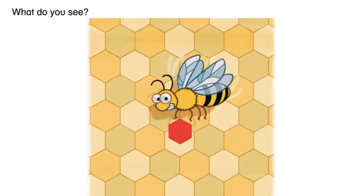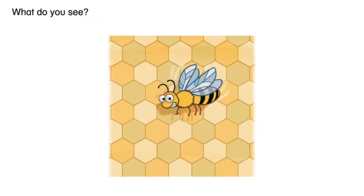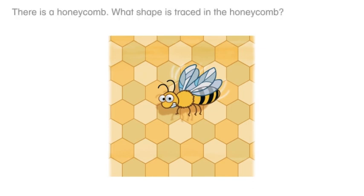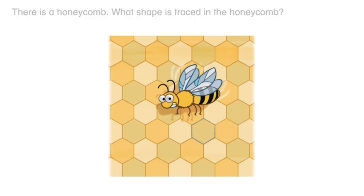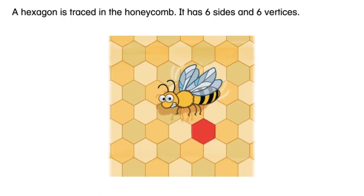What do you see? There is a honeycomb. What shape is traced in the honeycomb? A hexagon is traced in the honeycomb. It has six sides and six vertices.